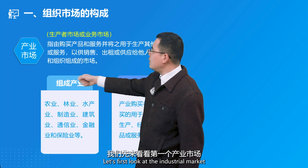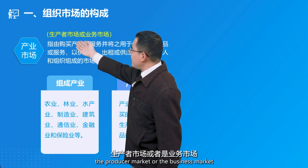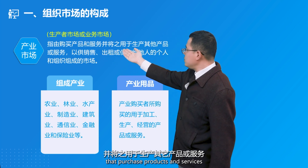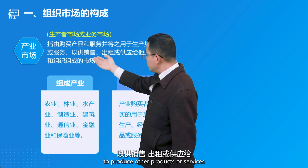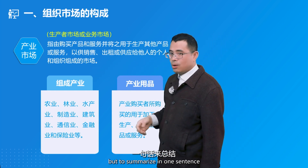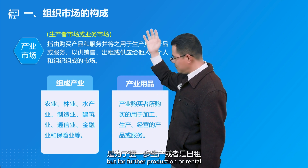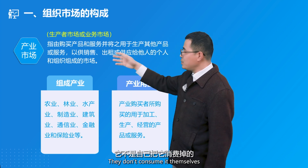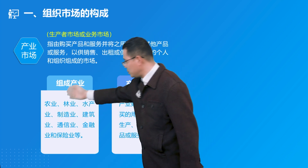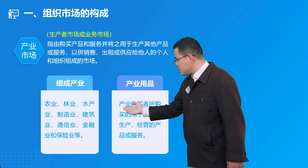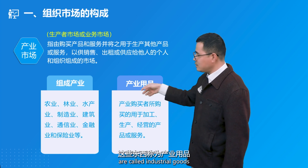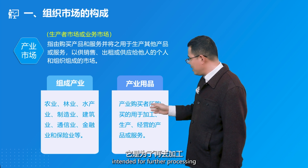Let's first look at the industrial market, also known as the producer market or the business market. It refers to the market composed of individuals and organizations that purchase products and services to produce other products or services for sale, rental, or supply to others. To summarize in one sentence: they purchase not for consumption, but for further production or rental. Industrial goods purchased by industrial buyers for processing, production, and operations are called industrial goods — not consumer goods.